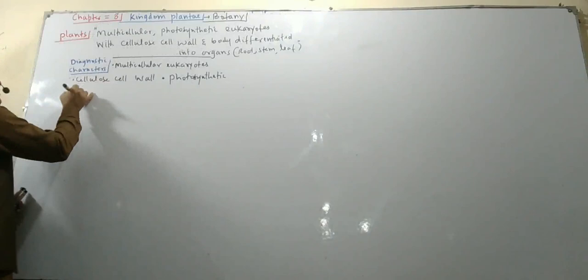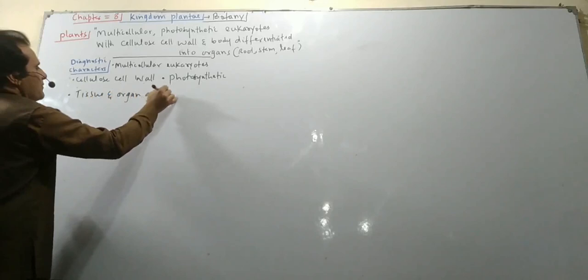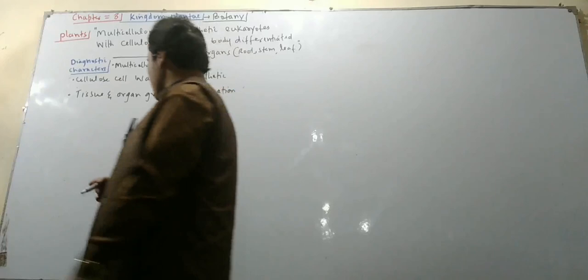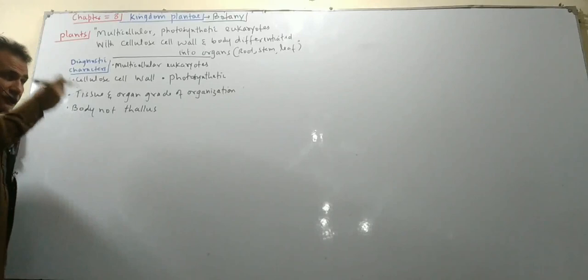This is what we call tissue and organ grade of organization. The cell has a nucleus — the cell and nucleus are present in the same way across chapters 5, 6, 7, and 8.